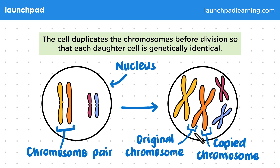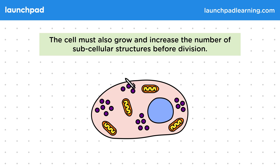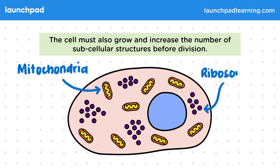So what other preparations are needed before the cell can divide? The cell must also grow and increase the number of subcellular structures before division. The animal cell will start off looking something like this and end up looking like this — larger overall, with more subcellular structures such as mitochondria and ribosomes. This increase ensures that when the cell divides, there will be enough subcellular structures for two individual cells.